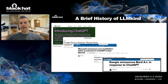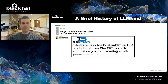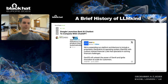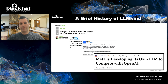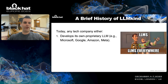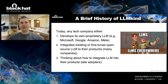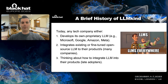In response, Google announced Bard AI, and later launched it on March 23rd to compete with ChatGPT. Salesforce launched their own LLM, Intuit launched their own LLM, Meta decided to develop its own LLM, and Amazon decided to build its own LLM. Currently, the tech industry — any tech company — either develops its own proprietary LLM or integrates existing or fine-tuned open-source LLMs into their products, while some late adopters only discuss whether they need to integrate LLMs.